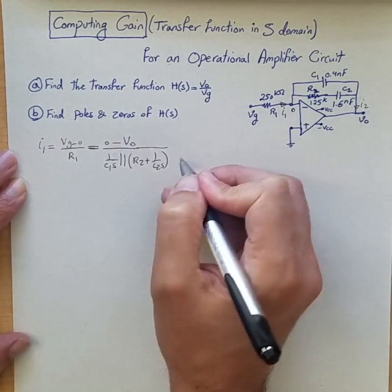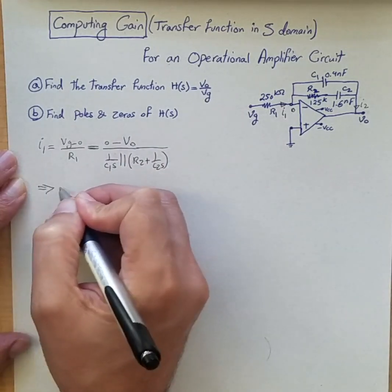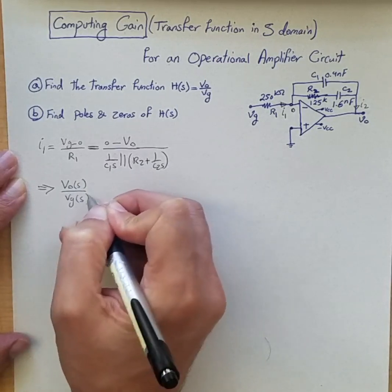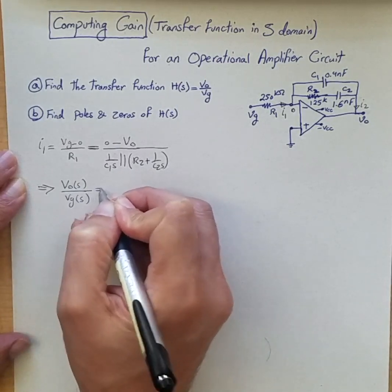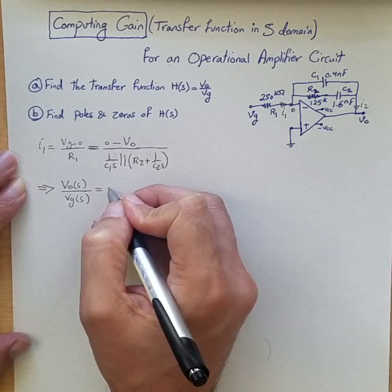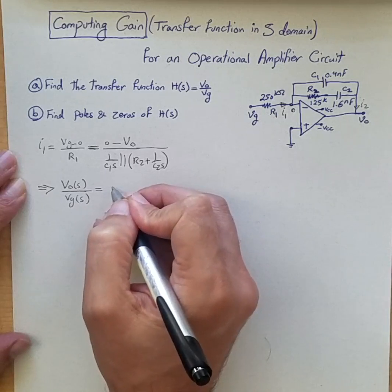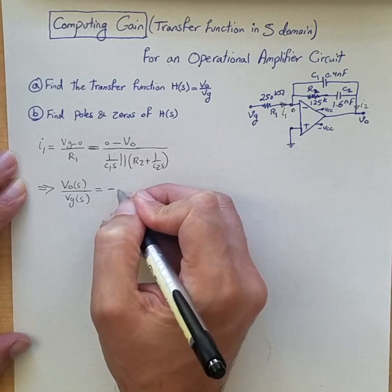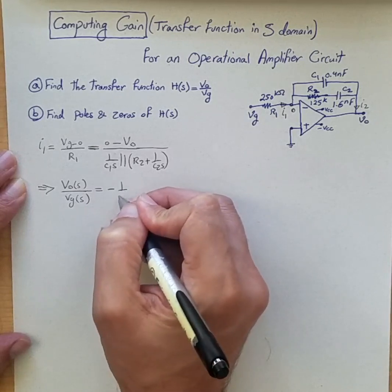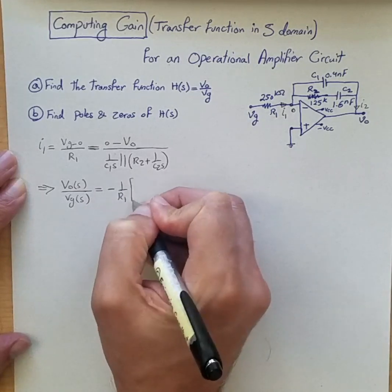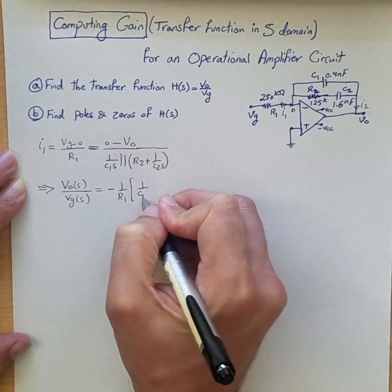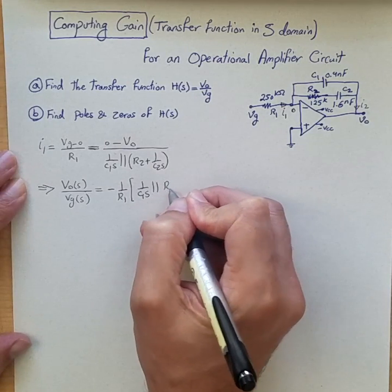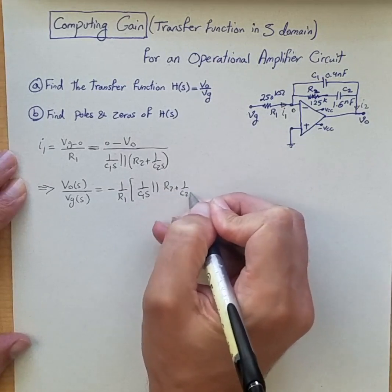Okay so from this it's very obvious that VOS over VGS, the transfer function that we are interested, that is equal to, it's as simple as minus 1 over R1 and then 1 over C1 S in parallel with R2 plus 1 over C2 S.